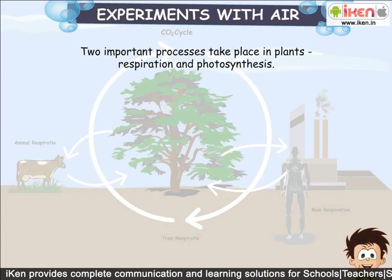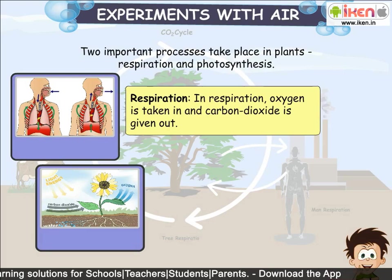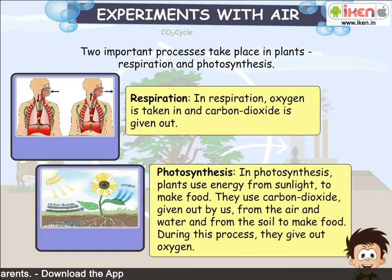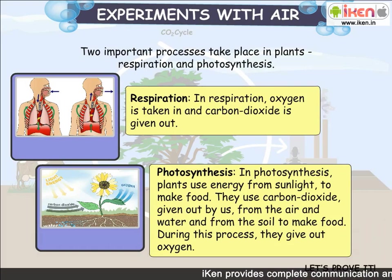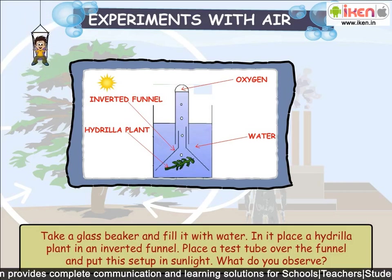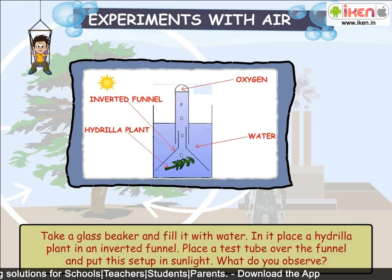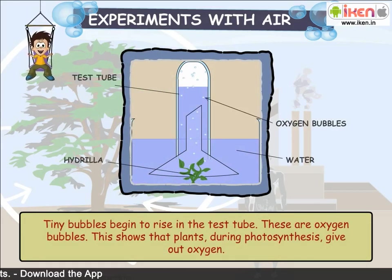Two important processes take place in plants: respiration and photosynthesis. In respiration, oxygen is taken in and carbon dioxide is given out. In photosynthesis, plants use energy from sunlight to make food — they use carbon dioxide from the air and water from the soil to make food. During this process, they give out oxygen. To prove it: take a beaker filled with water, place a hydrilla plant in an inverted funnel, place a test tube over the funnel, and put the setup in sunlight. Tiny bubbles begin to rise in the test tube — these are oxygen bubbles, showing that plants give out oxygen during photosynthesis.